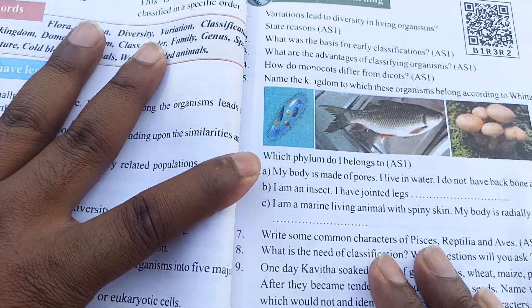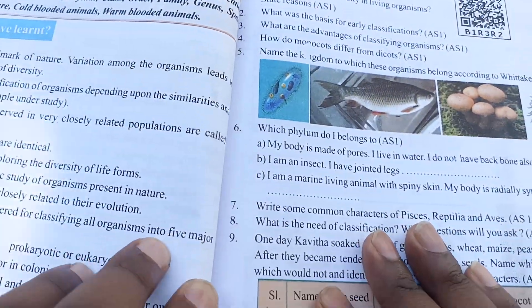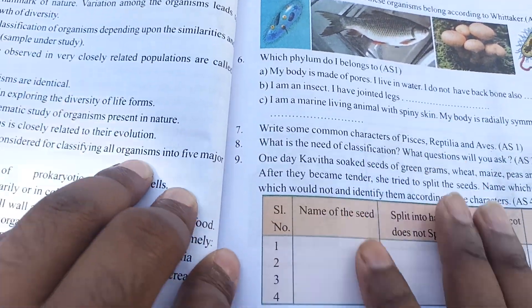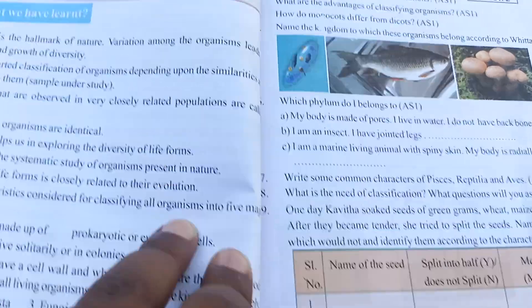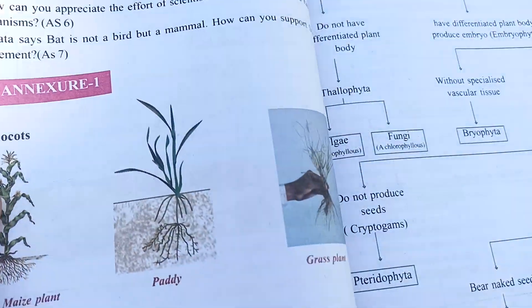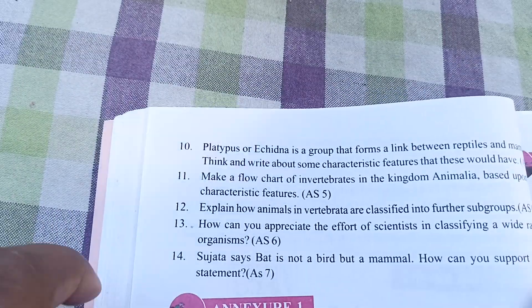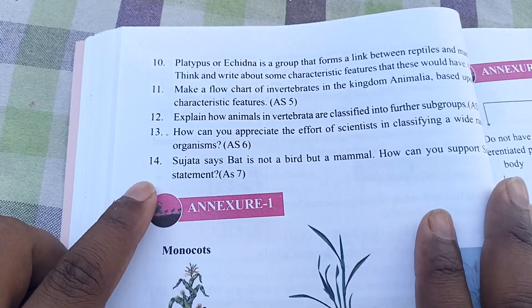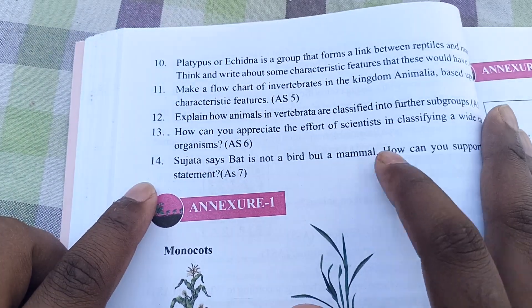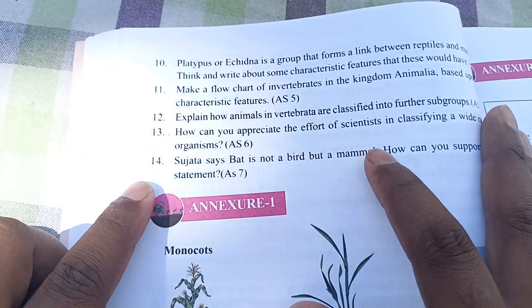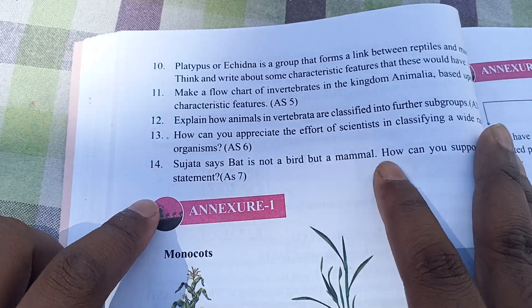So if you see, there are 9 questions up to here. After that, there are 14 questions total in this section. So we will discuss all questions up to 14.